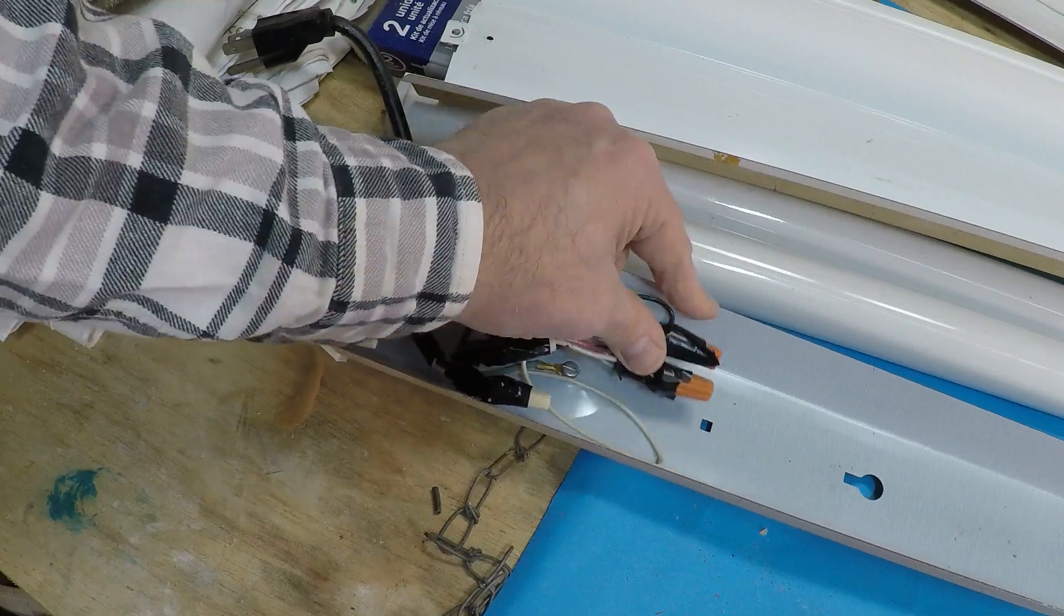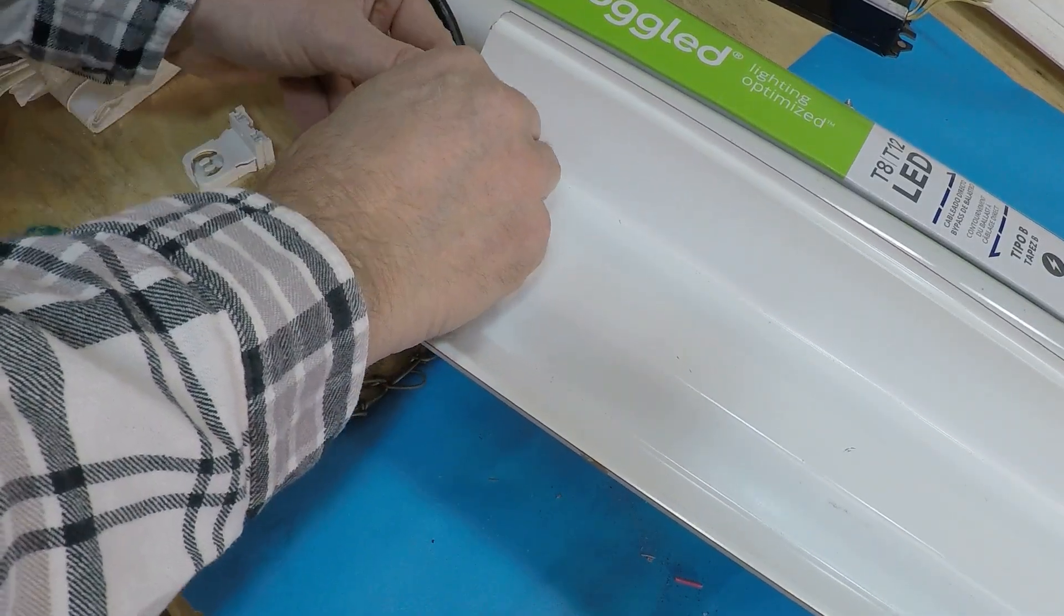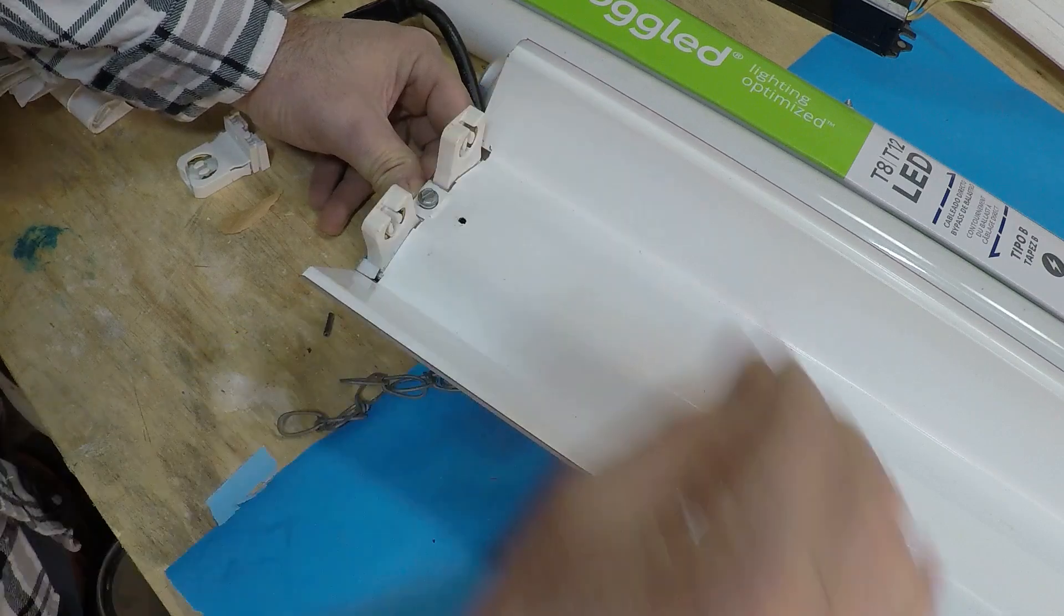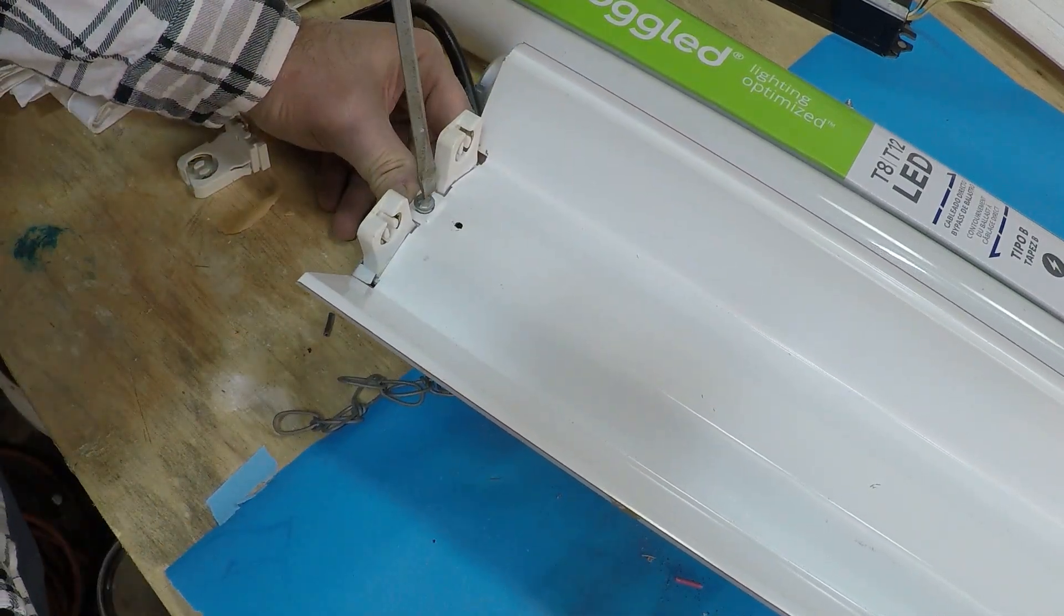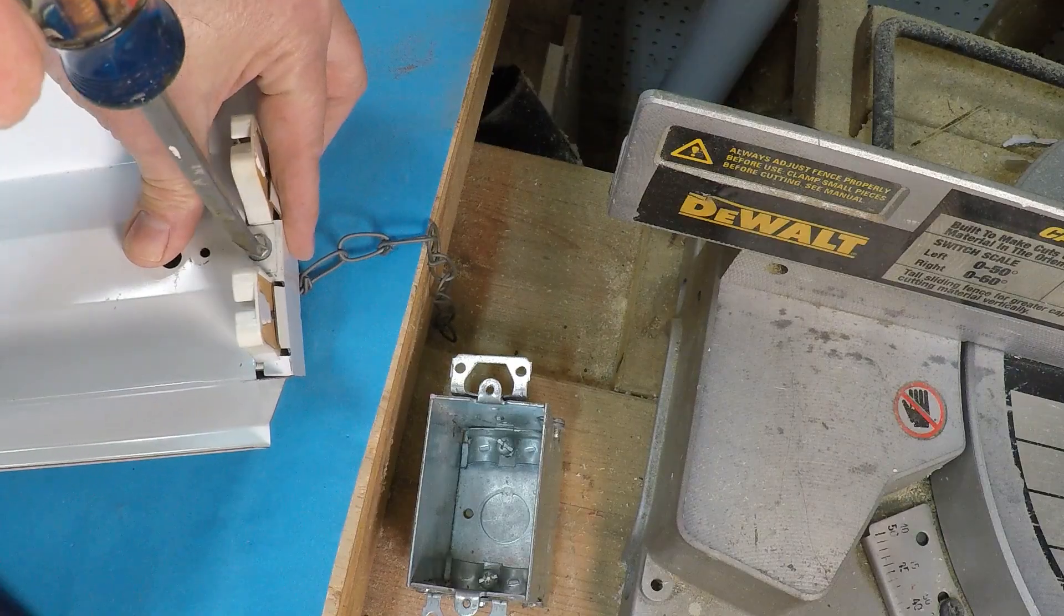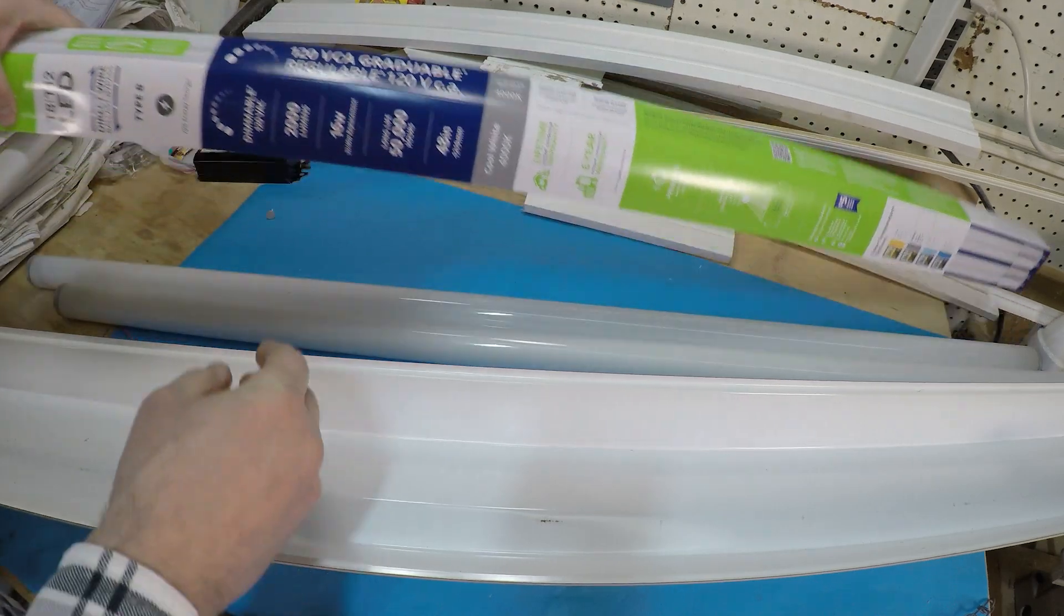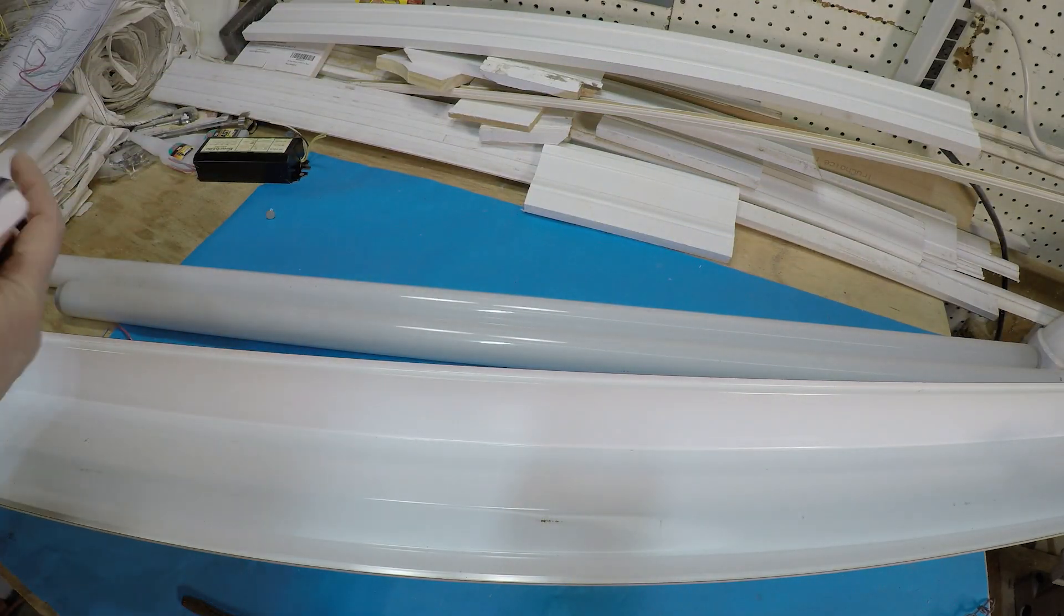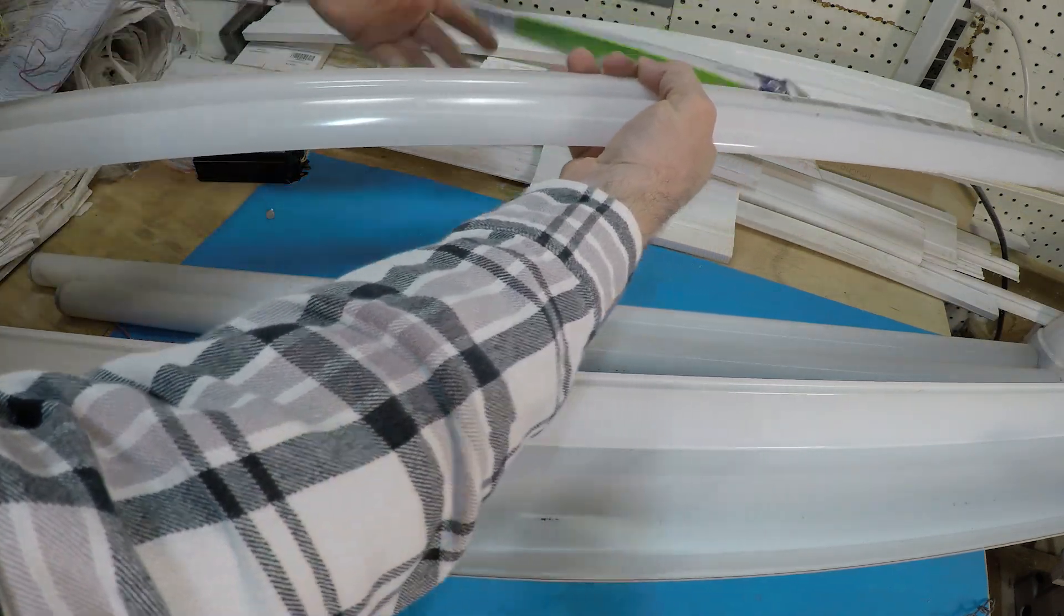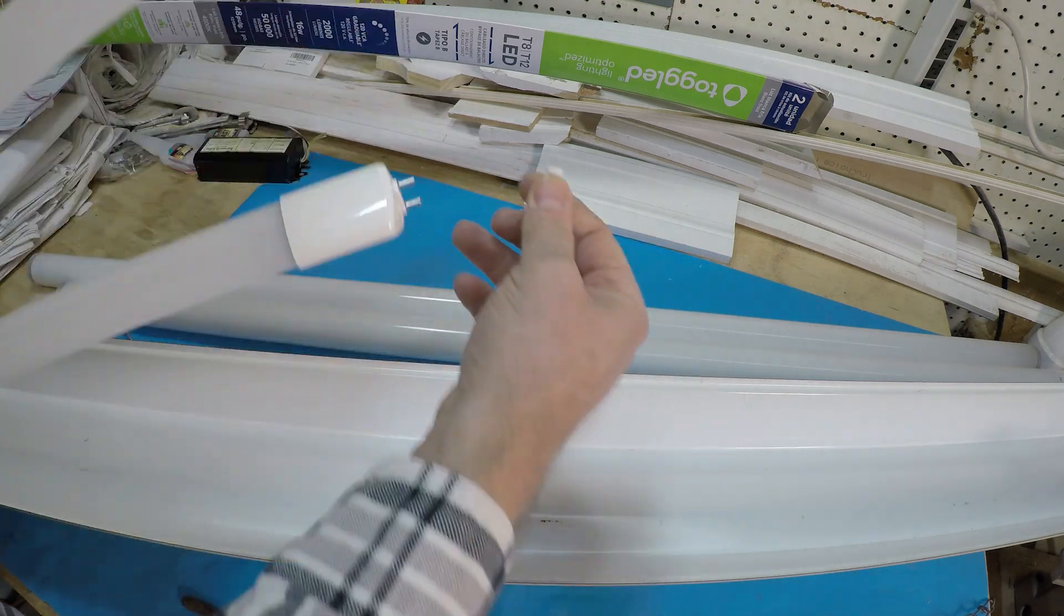Now we're going to put the cover back and the screws. Just one screw on each side. Of course, this thing's a hundred years old, so it's a flathead. We're set there. Now we're going to take the bulbs out of the package.